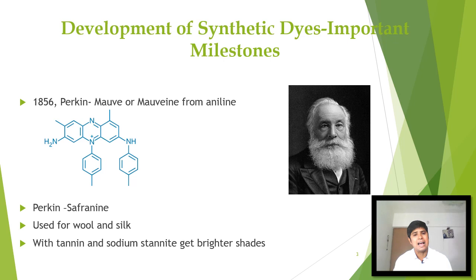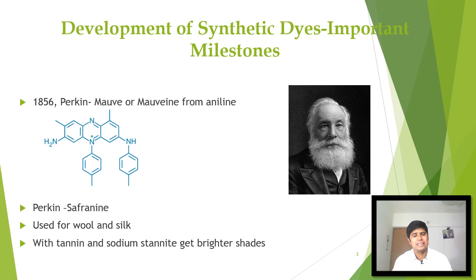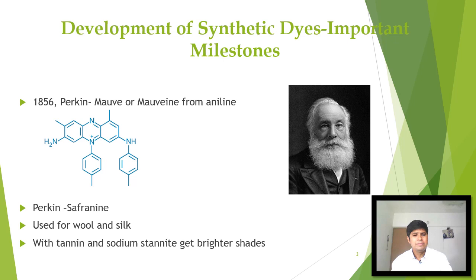Let us look at the next topic: development of synthetic dyes as an important milestone. In 1856, a famous British chemist Perkin synthesized the first synthetic dye, mauve or mauvin, from aniline. Actually he was trying to prepare a medicine for malaria disease, and at that time he discovered this dye serendipitously.